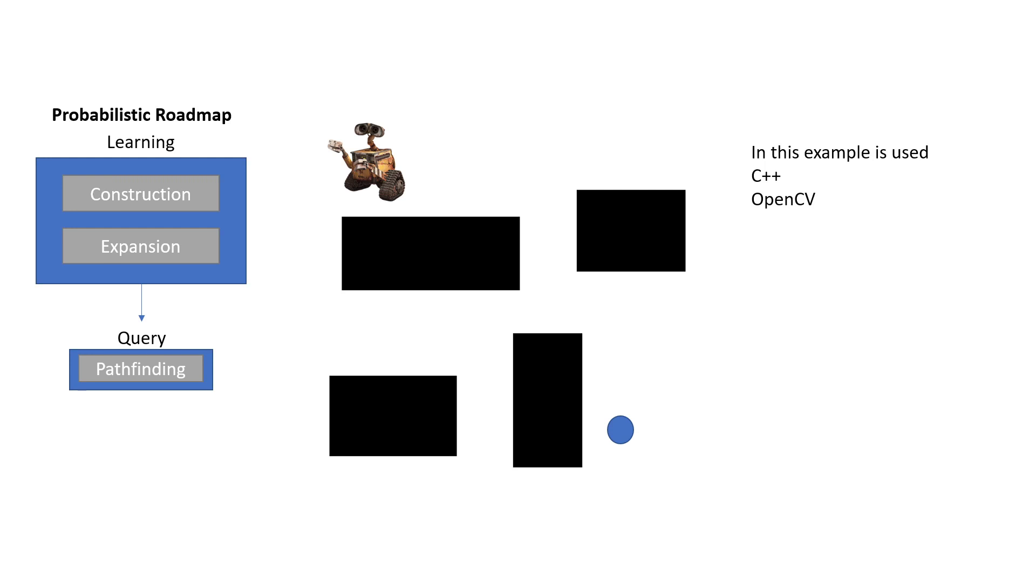With a probabilistic roadmap, we will try and map the area where he's able to walk by going through a couple of phases. And then after that, we will do some pathfinding. In this example, I'm using C++ and OpenCV, so I'm doing this with pictures instead of an actual robot.